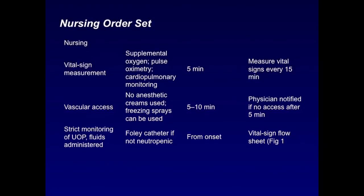Now, the nursing order set that they suggest in this paper is an automatic nursing order set. So if the patient gets referred to the shock room, place them with a nursing order set on supplemental oxygen, the pulse ox with cardiopulmonary monitoring, and measure the vital signs every 15 minutes, and record the pulse ox every 15 minutes, and apply the supplemental oxygen, pulse ox, and cardiopulmonary monitoring within five minutes. Vascular access should be obtained within five to 10 minutes, and the physician should be notified if there's no access after five minutes. A Foley catheter should be placed, and strict monitoring of urine output and fluids administered should be done from the onset and applied to a vital sign flow sheet, which we'll see subsequently.